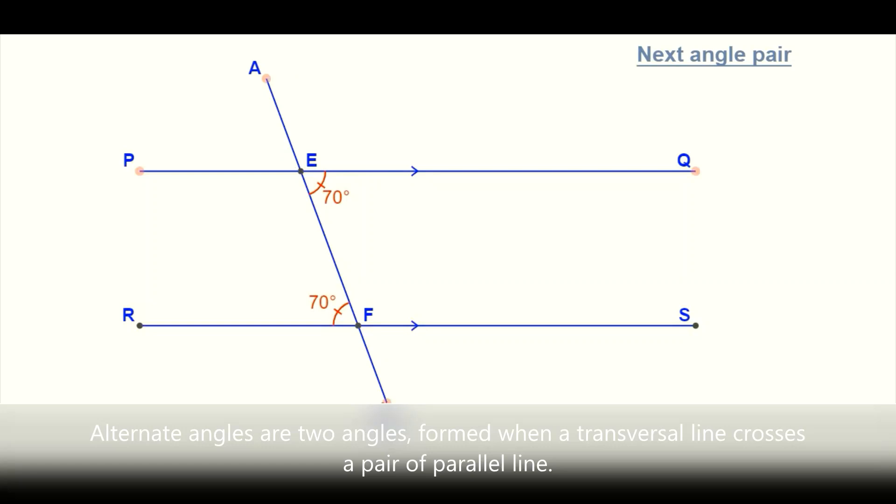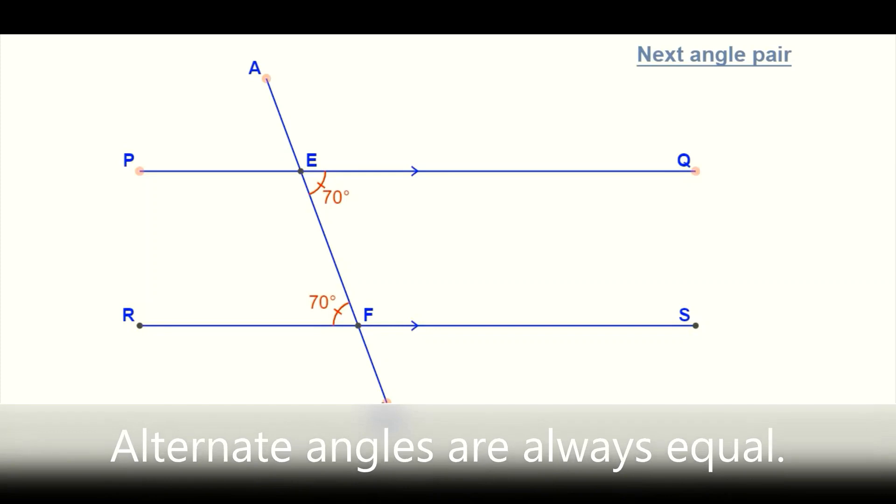Now where a transversal intersects parallel lines, angles are formed. One of the angle relationships that is formed is what we call alternate angles or Z angles.